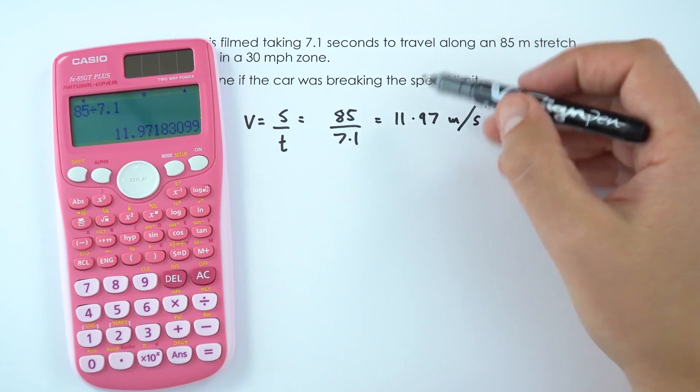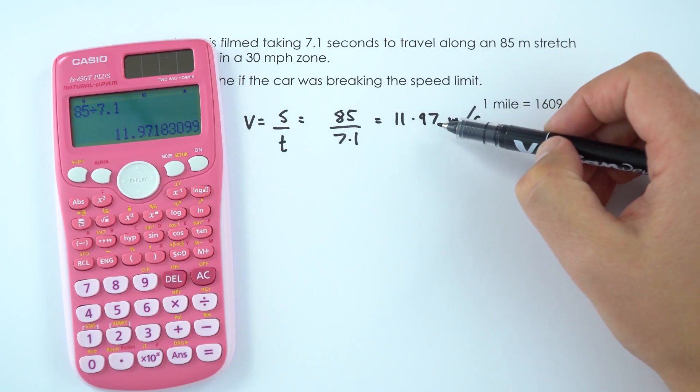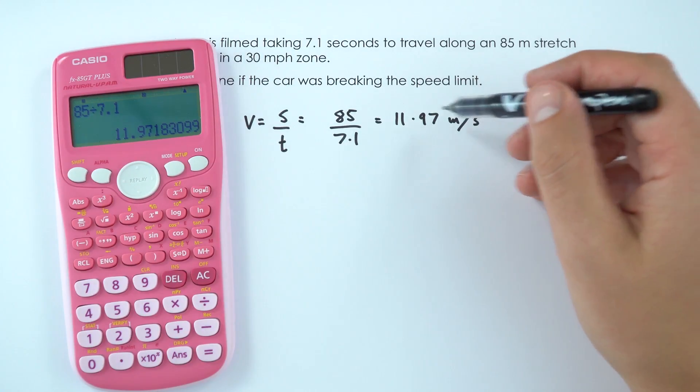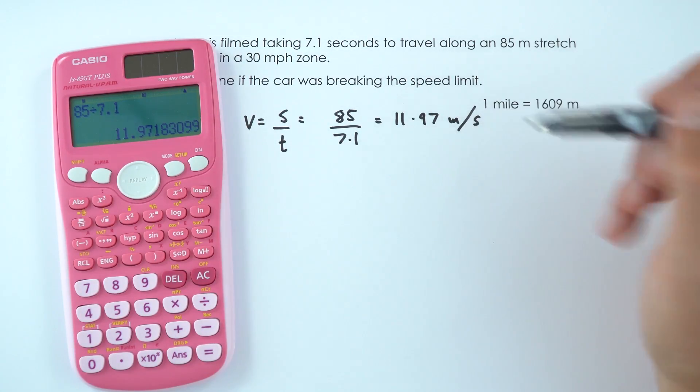So is that fast? I'm not quite sure. I don't know from the top of my head if this is bigger or lower than 30 miles per hour. So what we've got to do now is convert this from metres per second into miles per hour.